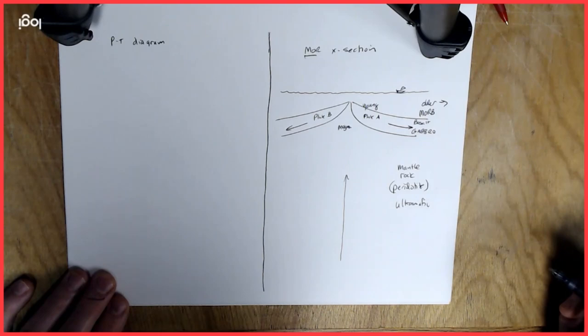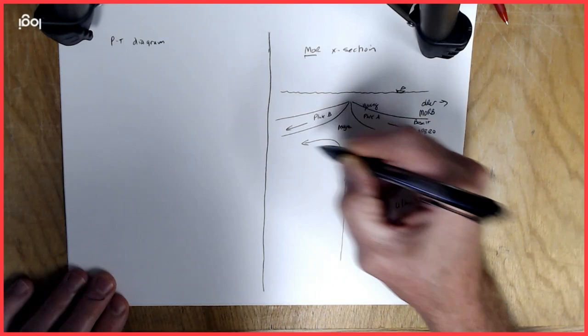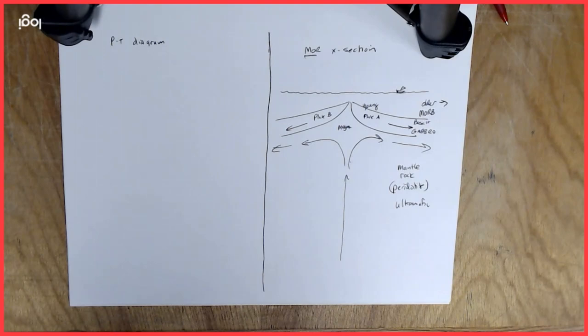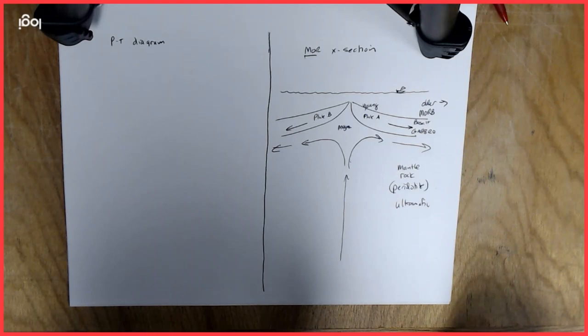So there will be upward motion in there. And then towards the surface it probably diverges and does something like this. So this is illustrating our mantle convection.